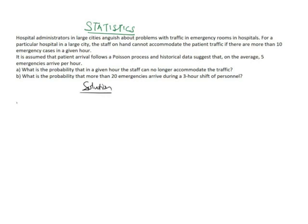For Part A, the average number of emergencies per hour — that is, lambda — is given as 5. The time interval is one hour, so t is equal to 1. Therefore, the Poisson parameter mu equals lambda times t, which is 5 times 1, equal to 5.